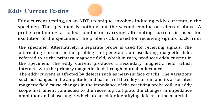Eddy current testing as an NDT technique involves inducing eddy currents in the specimen. The specimen acts as the second conductor referred to above. A probe containing a coil conductor carrying alternating current is used for excitation of the specimen. The probe is also used for receiving signals back from the specimen; alternatively, a separate probe is used for receiving signals.